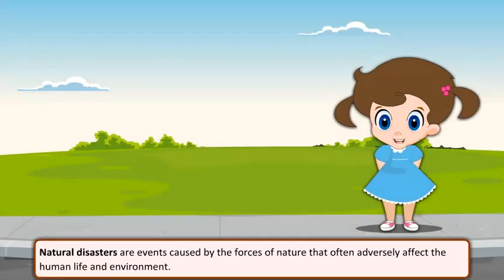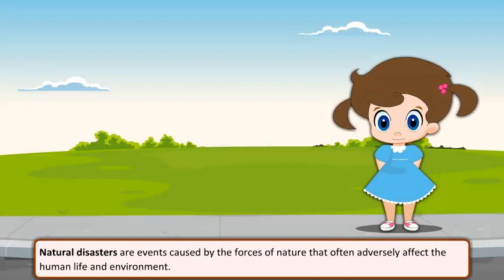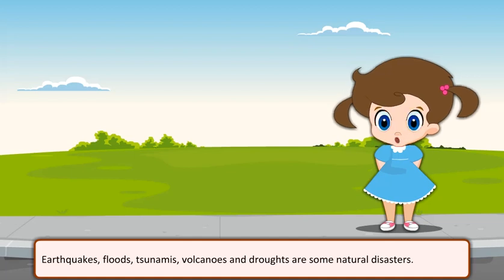Natural disasters are events caused by the forces of nature that often adversely affect human life and the environment. Earthquakes, floods, tsunamis, volcanoes, and droughts are some natural disasters.